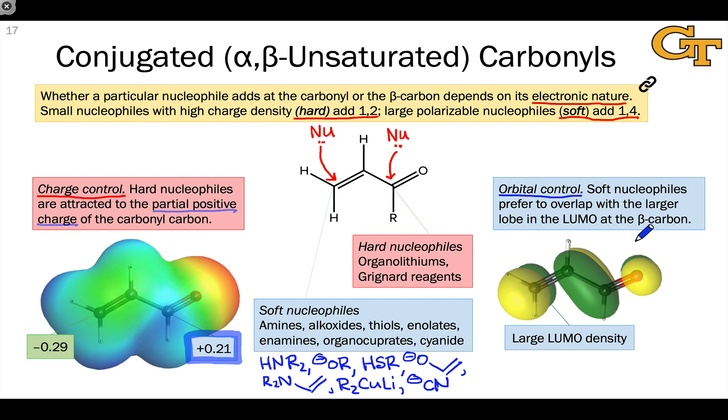The nucleophile engages with an empty orbital, the lowest unoccupied molecular orbital in the unsaturated carbonyl, and the largest lobe in the LUMO of the unsaturated carbonyl is located at the beta carbon. This large LUMO density essentially provides a target for the filled nucleophilic orbital within the soft nucleophile, and because the beta carbon is the location of the largest LUMO density in a typical alpha-beta unsaturated carbonyl, soft nucleophiles add there selectively.